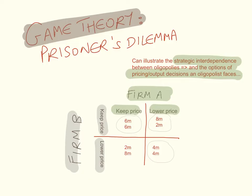Conversely, if firm A keeps its price but firm B lowers its price, firm A will make $2 million and firm B will make $8 million. So pricing and output decisions will be affected by your competitors' choices. Obviously the best-case scenario for firm A is to lower its price while firm B keeps its price — but that's very unlikely, because if firm A lowers its price, firm B will most probably respond by lowering its price as well, and then they both make $4 million. Game theory is used to explain the pricing and output decisions an oligopolist faces.